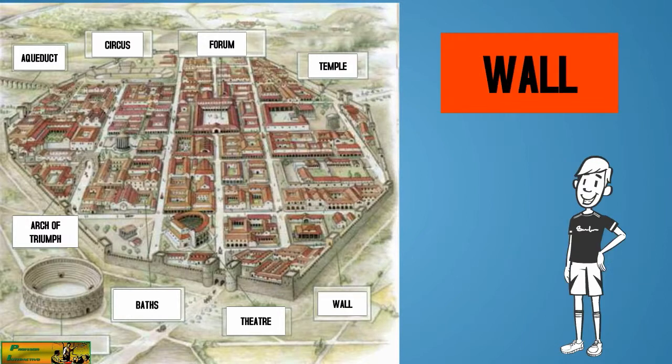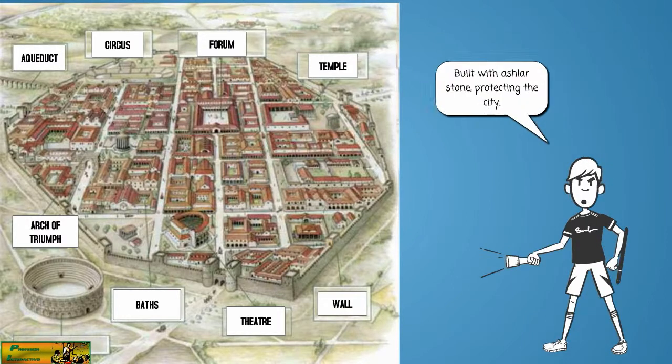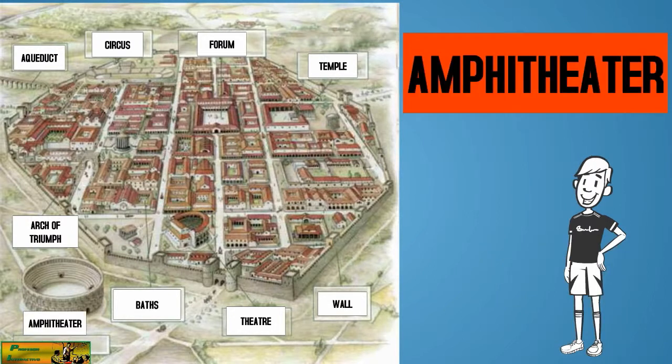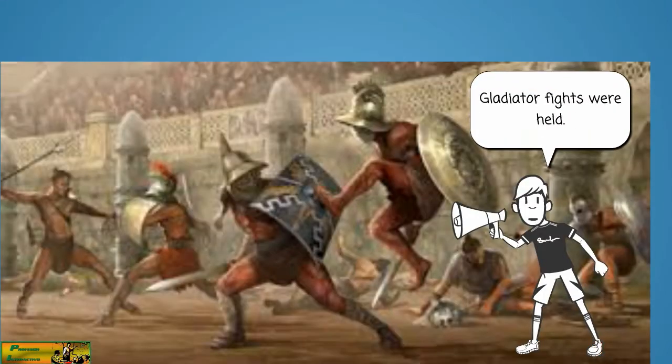Wall, built with ashlar stone, protecting the city. Amphitheater, where gladiator fights were held.